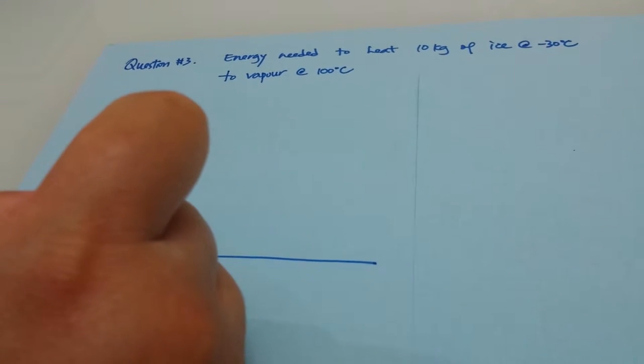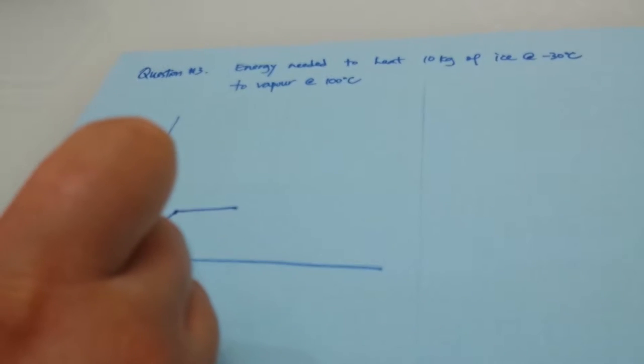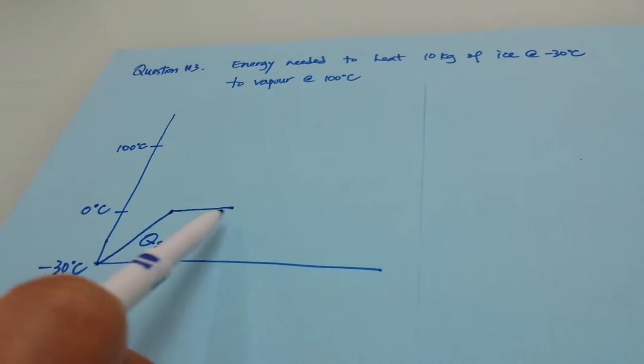And at that point, additional heat, the latent heat, is going to be added to turn all the ice at 0 degrees Celsius to water at 0 degrees Celsius. So we are talking about the heat, the latent heat here.